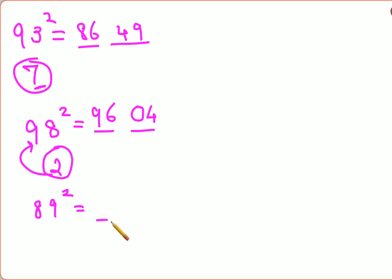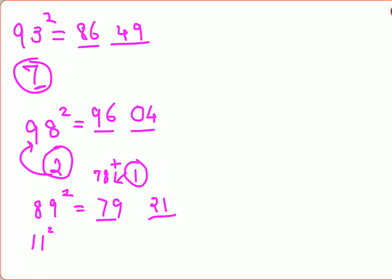Now let's try 89 squared. It is 11 away from 100. First, do 11 squared which is 121, but we write only the last two digits: 21, and carry the 1. Subtract 11 from 89 to get 78, then add the carry 1 to get 79. So 89 squared is 7921.